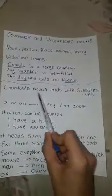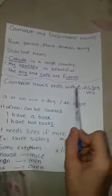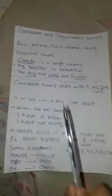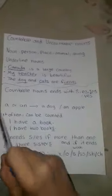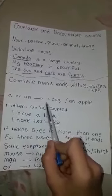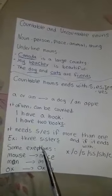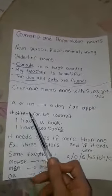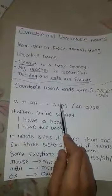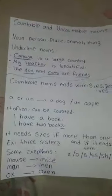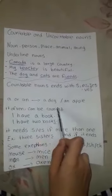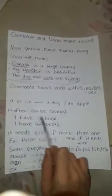Countable nouns can end with -s, -es, or -ies. We use a or an with countable nouns — like a dog or an apple. Countable nouns often can be counted.